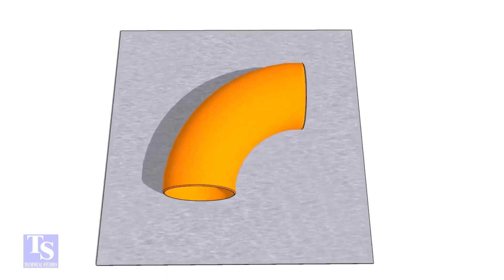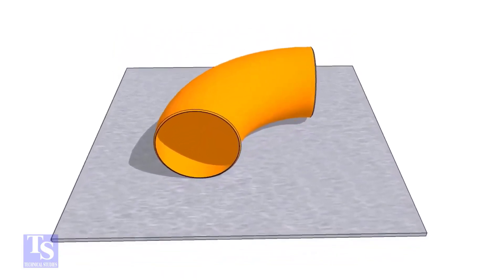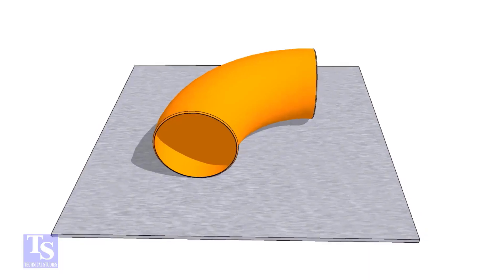First of all, choose a leveled plate and put the elbow on it. Check the outer diameter of the elbow.